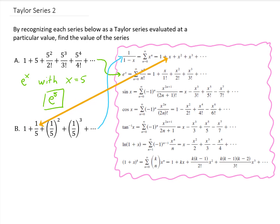We start with a 1, we add 1 fifth, then we square that 1 fifth, and then we cube that 1 fifth, and so on.